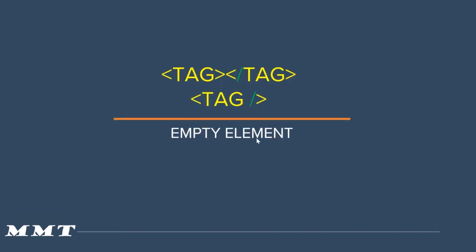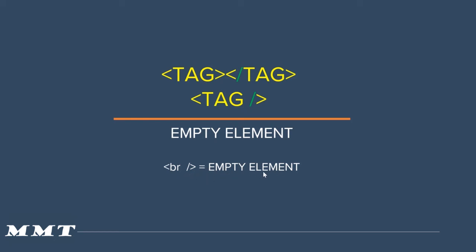What is an empty tag? When you don't have data between a starting and a closing tag, you call it an empty tag. An empty tag is also called a self-closing tag. If you want to add a new line, that is denoted with the br element: less-than br forward-slash greater-than. You don't mention any data in it and it is called an empty element.